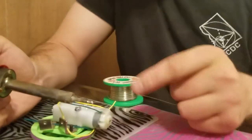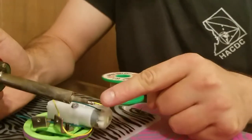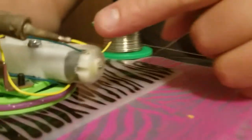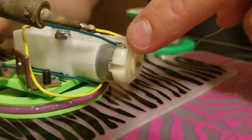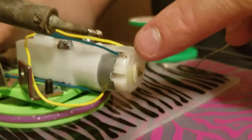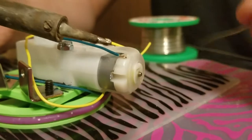Okay, so now there's a ball of solder on the end of this soldering iron and I'm going to use that to transfer heat to the tab and the wire on the motor.